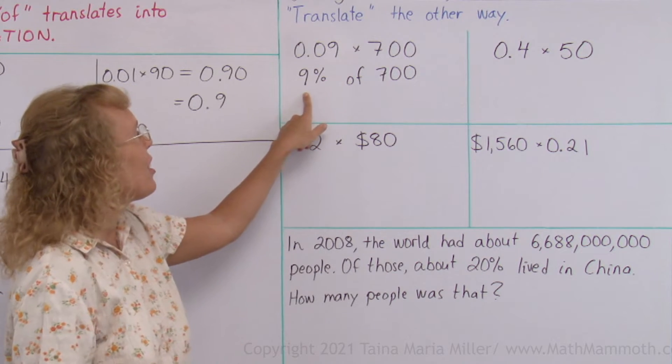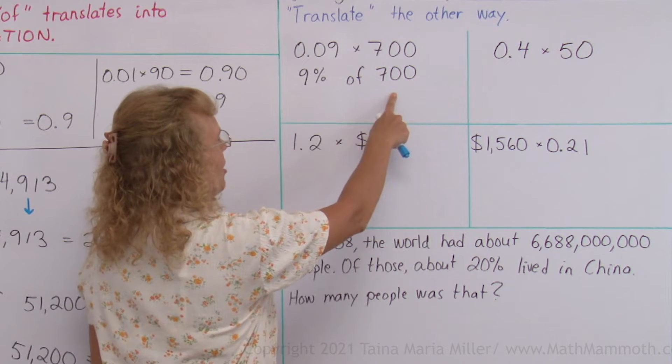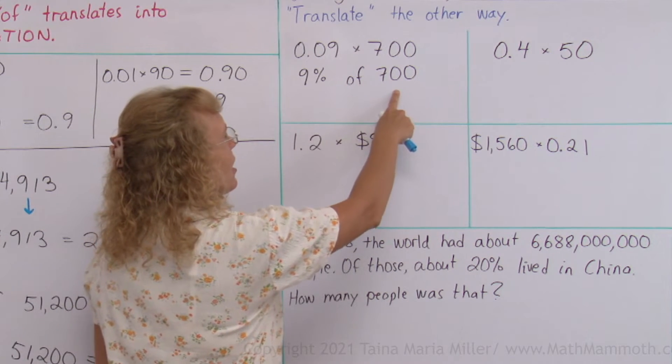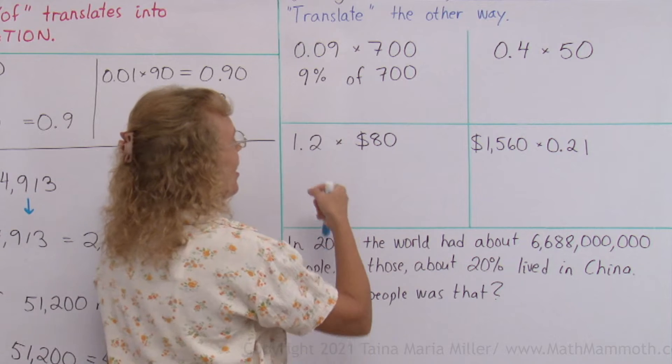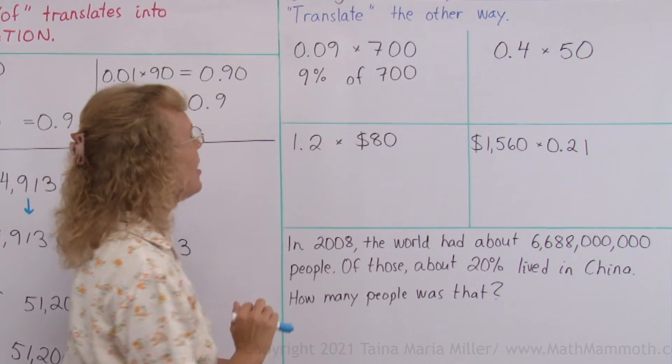Or you could figure that, let's think of 1% of 700 first. 1% of 700 is just 7. And so 9% is 9 times that, 9 times 7, 63.